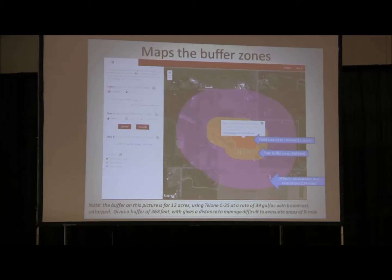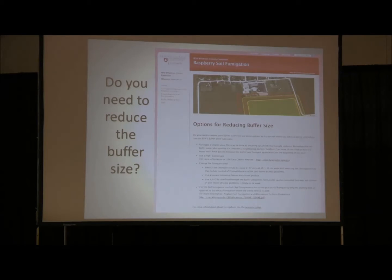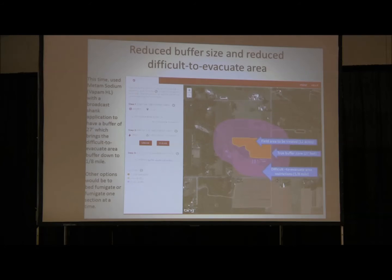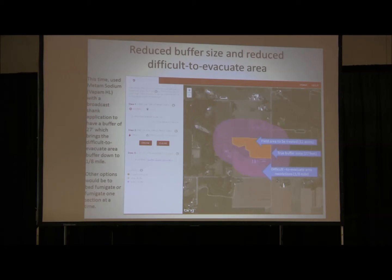There's a page with some options and suggestions for reducing your buffer size, with links to more information. For comparison, we ran the same field using metam sodium — or Vapam — with a broadcast shank application as Tom was suggesting, and that now has a buffer of only 27 feet, which brings the difficult-to-evacuate area buffer size down to an eighth of a mile. The difficult-to-evacuate area is the one where you have to be concerned about hospitals, daycare facilities, and jails. On the map, the orange is the field, the light orange around it is the actual buffer, and the purple is the difficult-to-evacuate area.